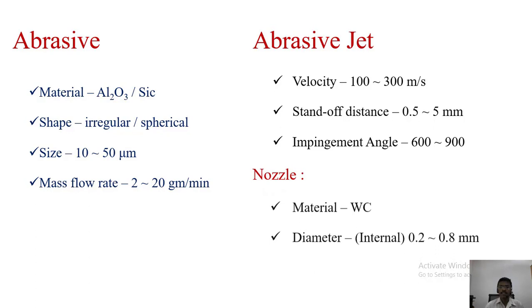For the nozzle, it will wear out frequently because the abrasive particles hit the nozzle. So it will wear out. The material should be very hard. For that we are using tungsten carbide for the nozzles. The diameter of the nozzle will be 0.2 to 0.8 mm.